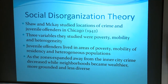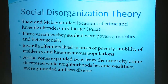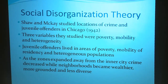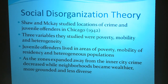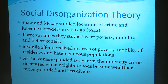The three variables they focused on in their study were poverty, mobility, and heterogeneity — or the diversity of the population. They found that the juvenile offenders lived in areas or zones of the city with higher percentages of poverty, mobility of residency meaning people are changing households constantly, and also a heterogeneous or very diverse population in terms of ethnicity.